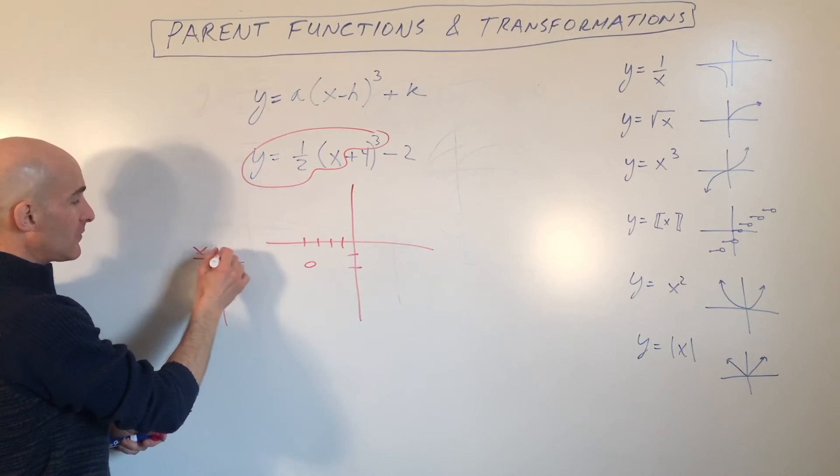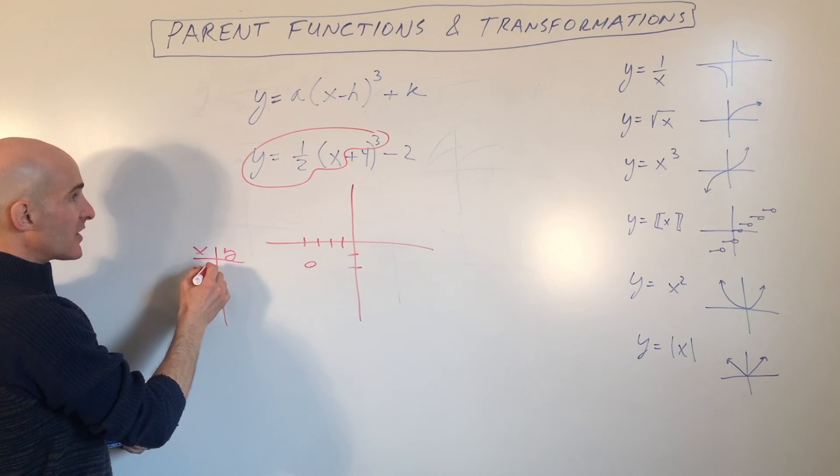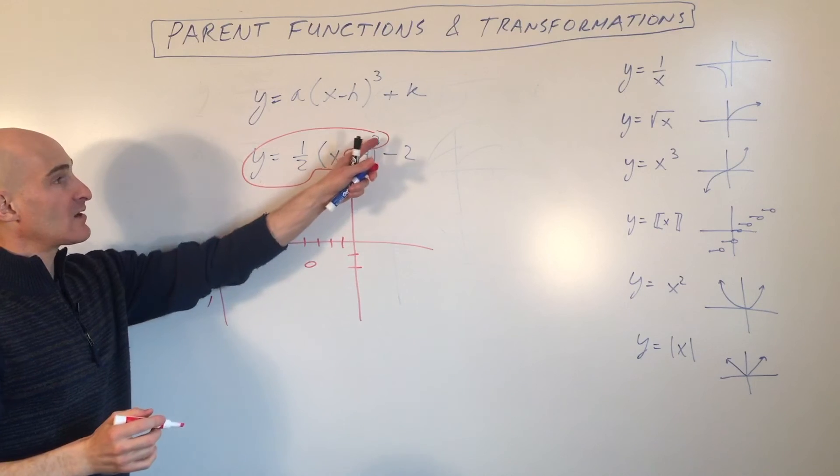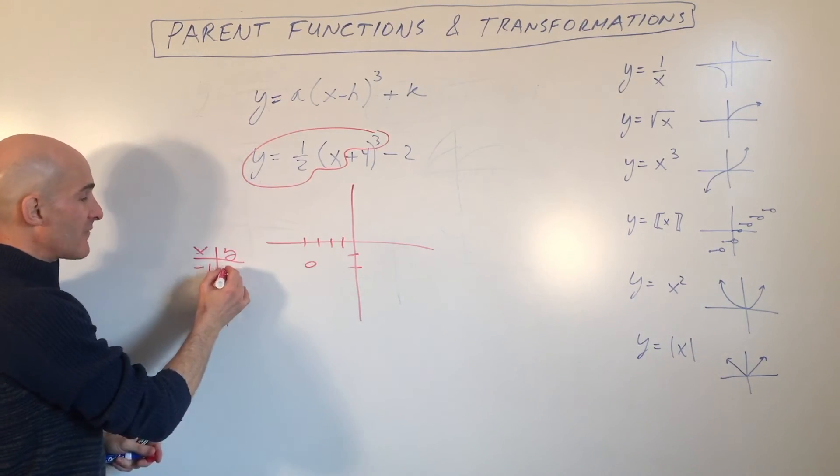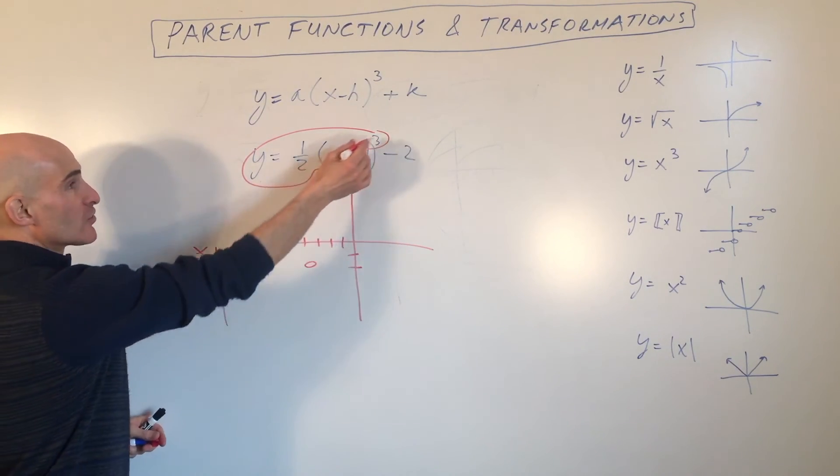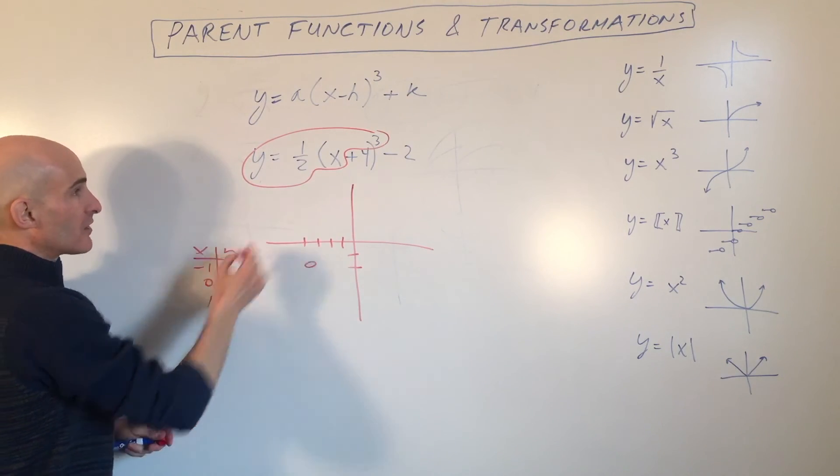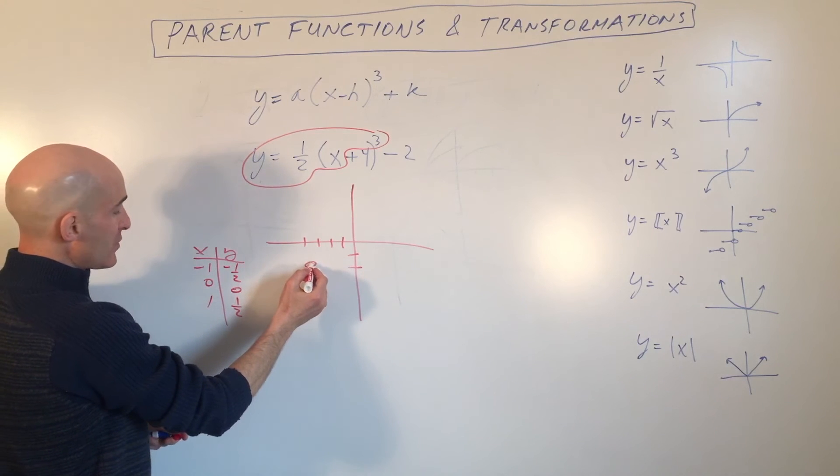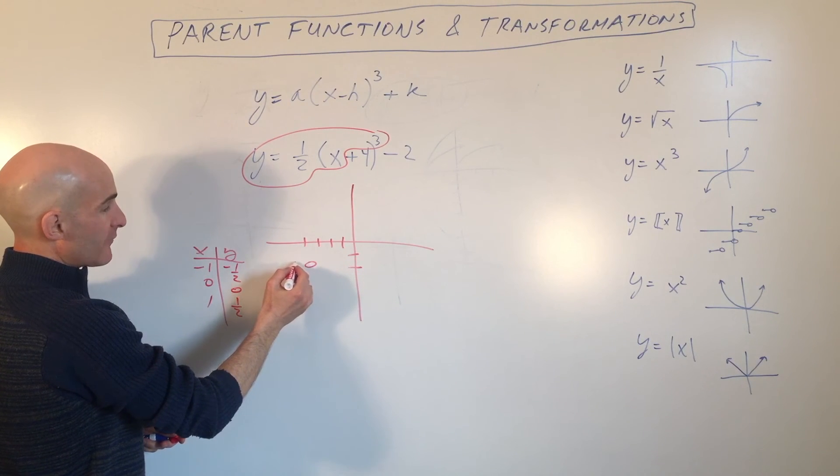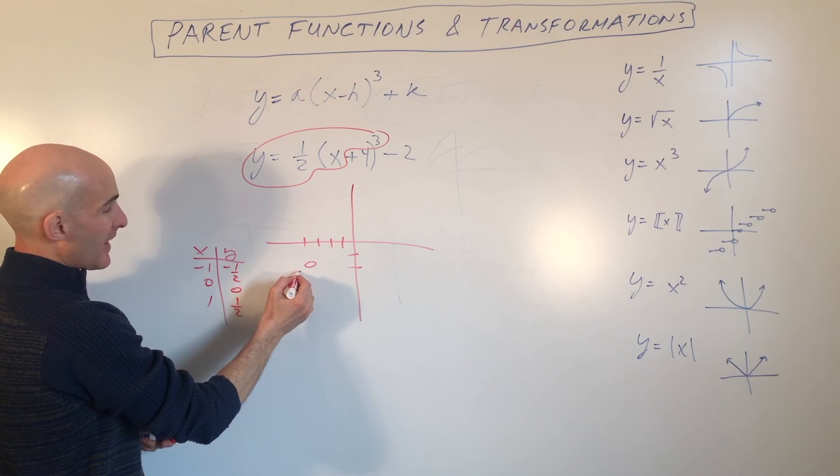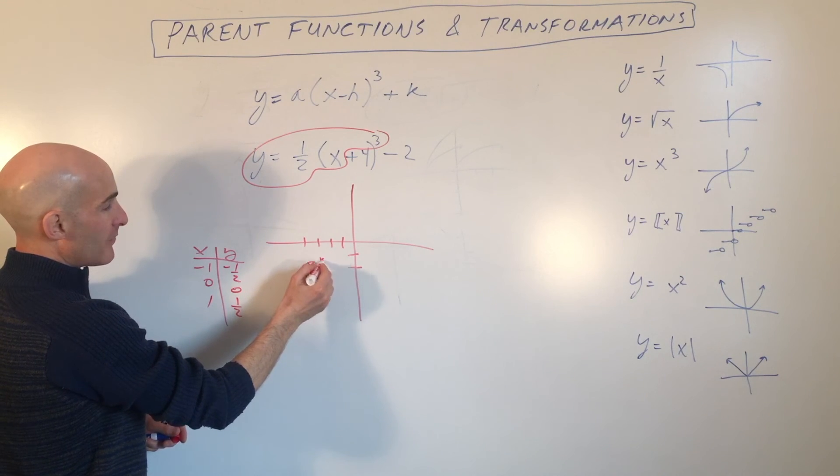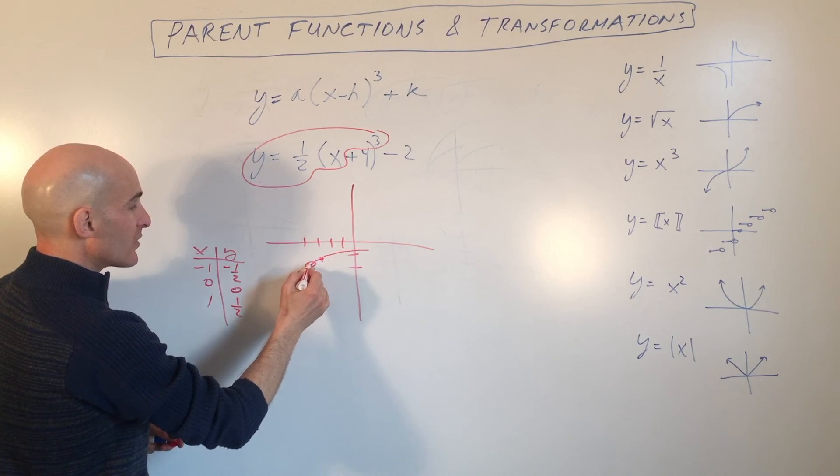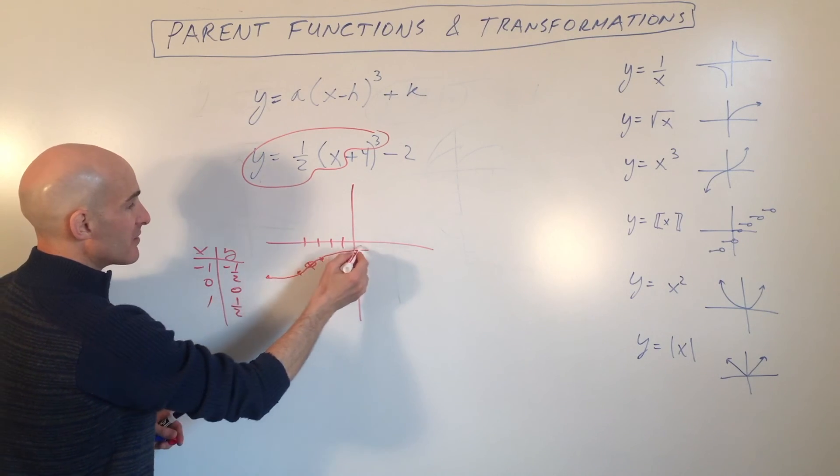y equals 1 half x cubed. So I'm just going to make a table. Pick some easy values like negative 1, 0, and 1. So x cubed, negative 1 cubed is negative 1, times 1 half is negative 1 half. 0 cubed is 0, times 1 half is 0. 1 cubed is 1, times 1 half is 1 half. So from here I'm going to go left 1, down 1 half. 0, 0. Right 1, up 1 half. And I didn't graph a whole lot of points here, but the graph is going to look like that.